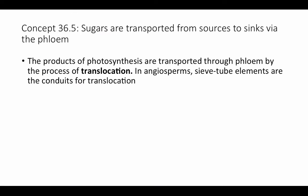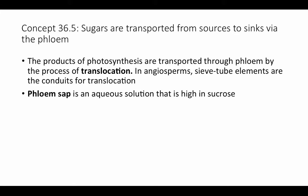The products of photosynthesis are transported through the phloem by a process called translocation. In angiosperms — the flowering plants — sieve tube elements are the conduits, the passageways for translocation. Phloem sap is similar to xylem sap, only it's water with sugars dissolved in it, so it's high in sucrose. This is the basis for the maple syrup that we love so much in this part of the country.